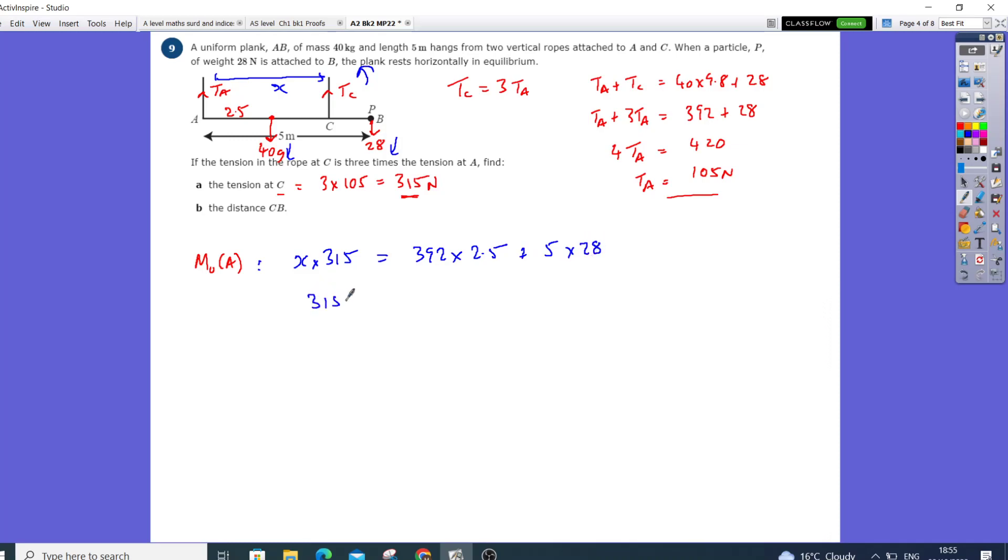So 315x equals 392 times 2.5, which gives me 980, plus 140.